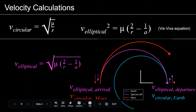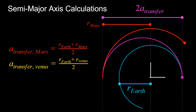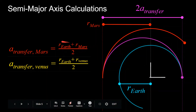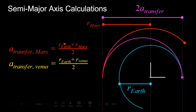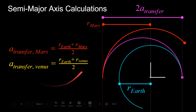We're going to want to know the velocity when the spacecraft departs Earth and when it arrives at Mars. We also need to calculate the semi-major axis of the transfer orbit, which is a very simple calculation. The semi-major axis of the transfer orbit is simply equal to the average of the two planets' distances from the Sun. In the case of going to Mars, it's just the distance of Earth from the Sun plus the distance of Mars from the Sun, divided by 2 — and the same for Venus.